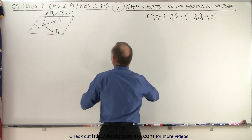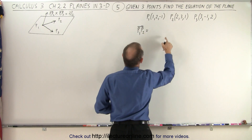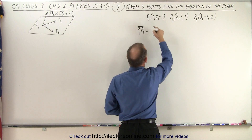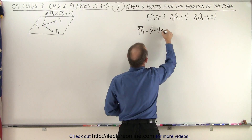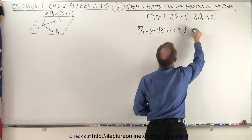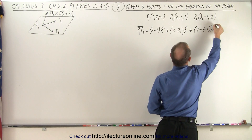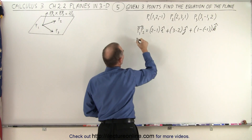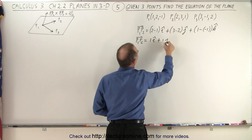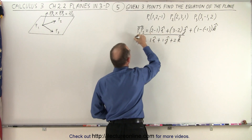So let's first find vector P1 to P2. Vector P1 to P2 is going to be equal to the component of P2 minus the component of P1 in the i-direction, so that gives us 2 minus 1 in the i-direction, plus 3 minus 2 in the j-direction, and plus 1 minus negative 1 in the k-direction. So vector P1 to P2 is equal to 1 in the i-direction, plus 1 in the j-direction, and plus 2 in the k-direction. There's our first vector on the plane.